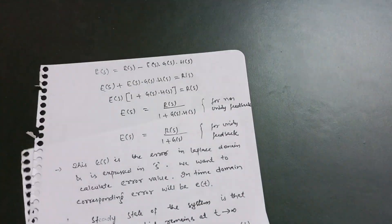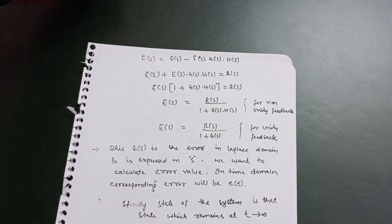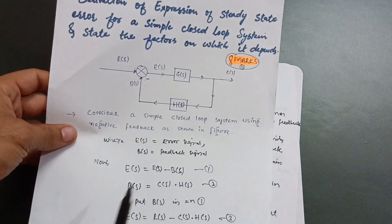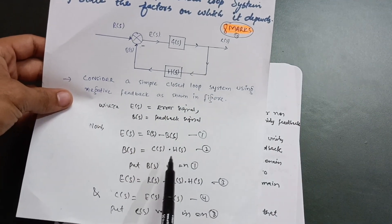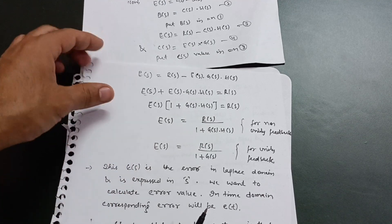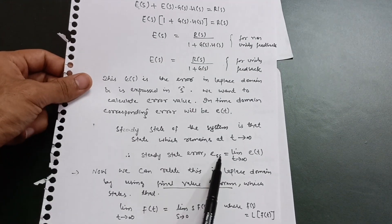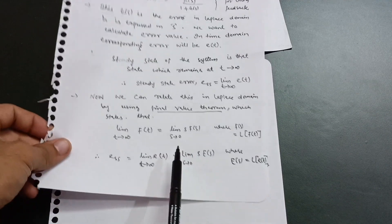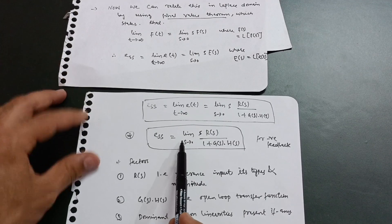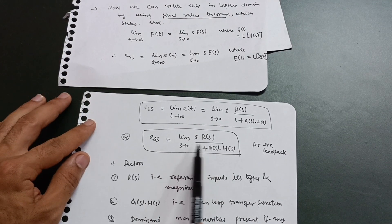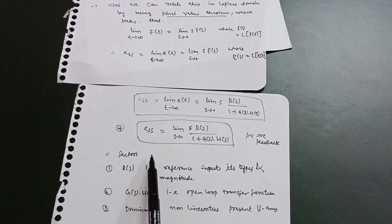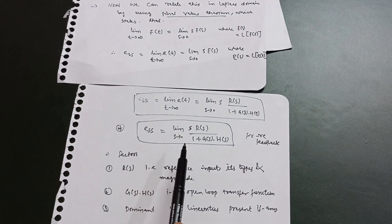So this is your full 10-mark question. If you write in this format you will easily get 10 marks. The format is: draw the block diagram, write the signals and equations to get E(s), then calculate steady state error using the limit as t tends to infinity of e(t), then apply the Final Value Theorem to get E_ss = lim(s→0) s·R(s) / [1 + G(s)·H(s)] for negative feedback. Write the three factors, and you will get full marks. I hope this is a beneficial video — share it with friends who need it. Thank you.